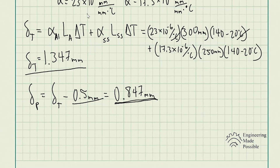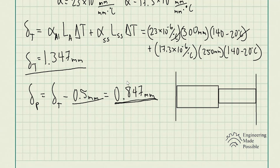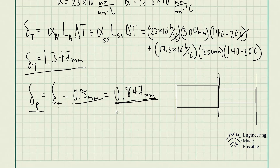This is similar to the statically indeterminate approach used previously: we release the constraint and see how much total deformation there would be, then solve for the force needed to push it back to the constraint. That force deforms the rods back to where they physically cannot expand further. The 0.847 millimeters is the total deformation to be brought back by that internal force — to where the two rods make contact.